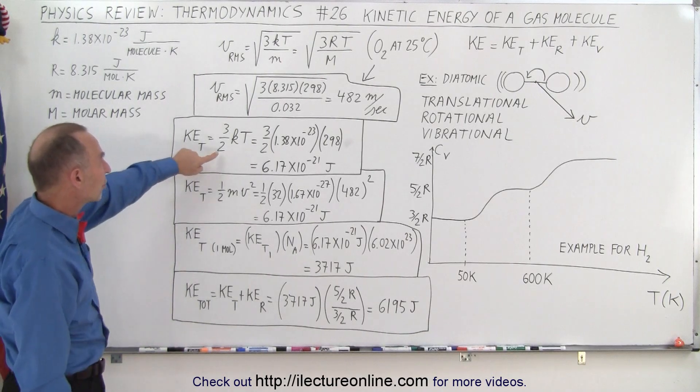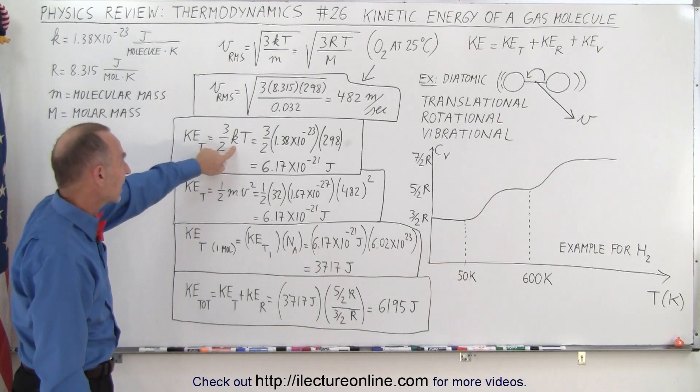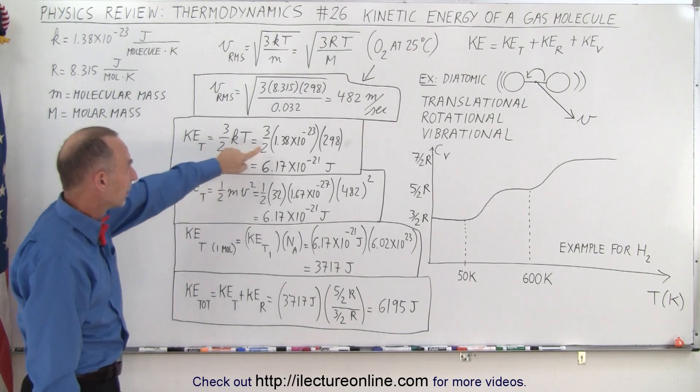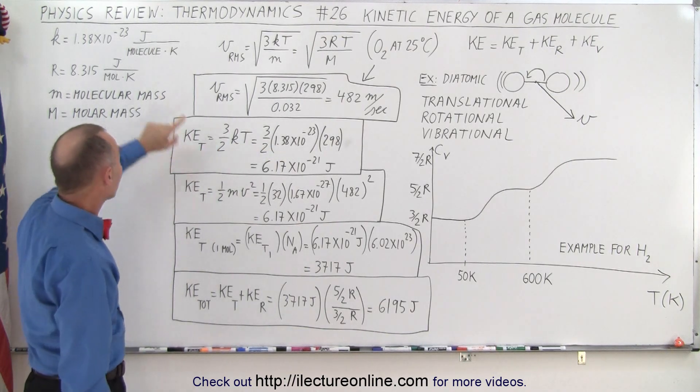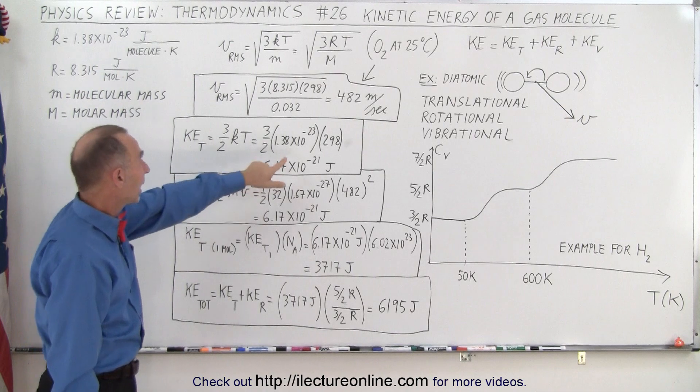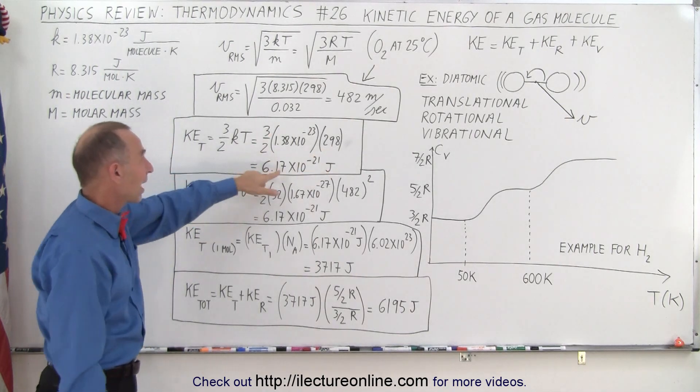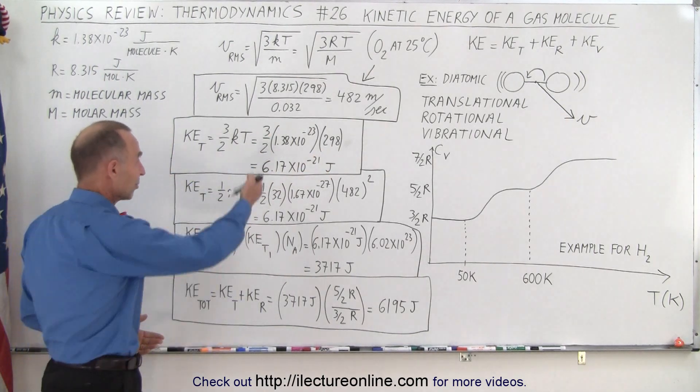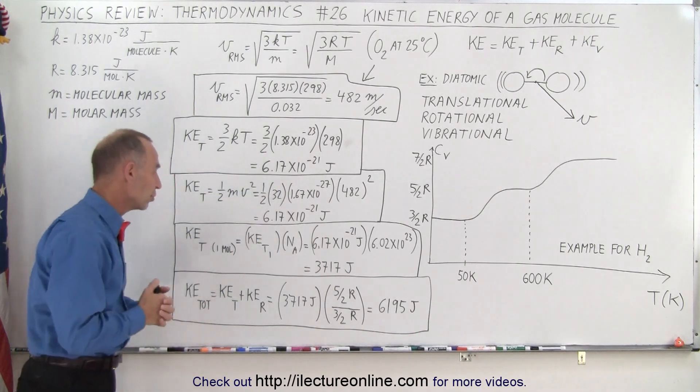We can also use the equation three halves kT. K again, this is the gas constant divided by Avogadro's number, becomes this number right here and we have times the temperature times three halves and that's the same number of course. We'd expect to get the same result regardless which method we use.